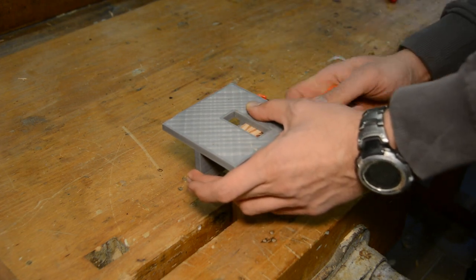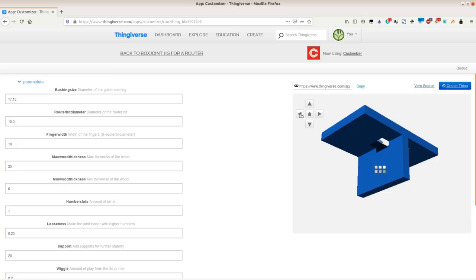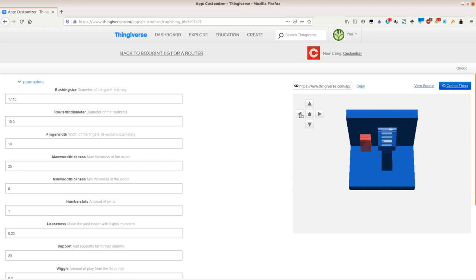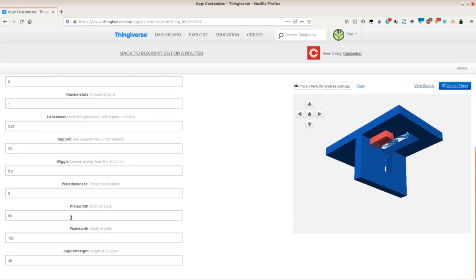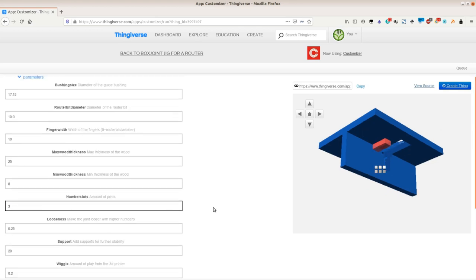This way we can cut the routing time in half. The only thing left is that it is still quite a bit annoying to move the jig after each cut. Depending on the size of your print bed there is an easy solution. We set the number of slots to three in the customizer.